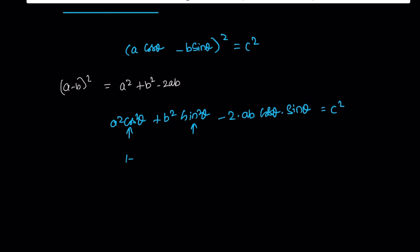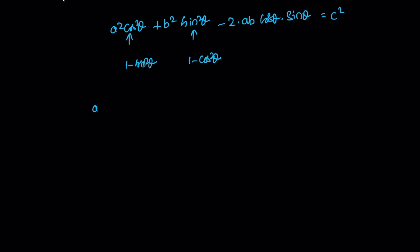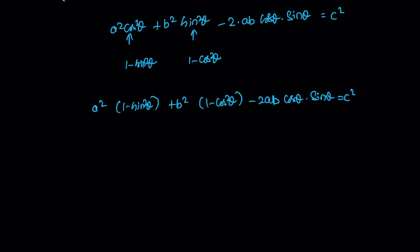Now we replace using the identity: cos²θ equals 1 minus sin²θ, and sin²θ equals 1 minus cos²θ. So we substitute: a² into (1 minus sin²θ) plus b² into (1 minus cos²θ) minus 2ab cosθ sinθ is equal to c².